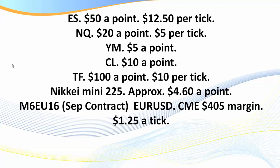One of our members recently pointed out the CME Forex contracts. The September contract for the EUR/USD is M6 EU 16. The margin is only $405 and it's $1.25 per tick. For those with a small amount of capital, it's something you may choose to look at. There's not a huge amount of volume running through it, but if you're trading under 10 contracts it may be an alternative worth considering.